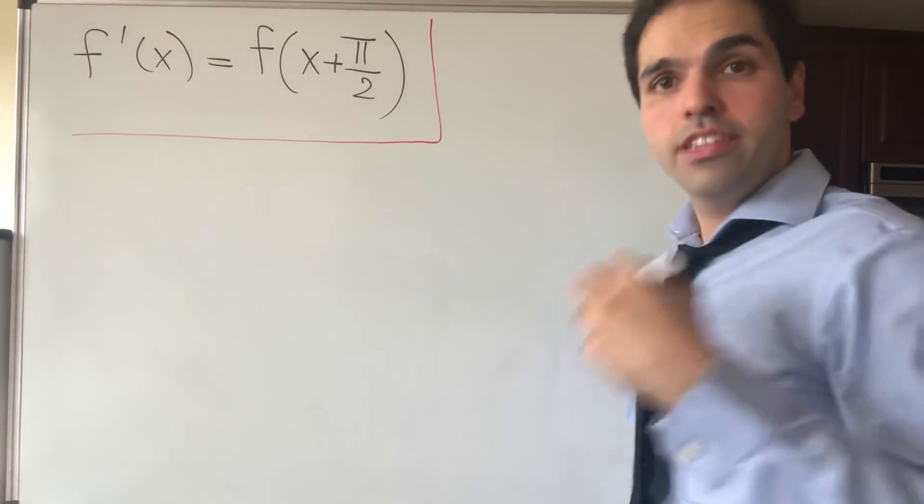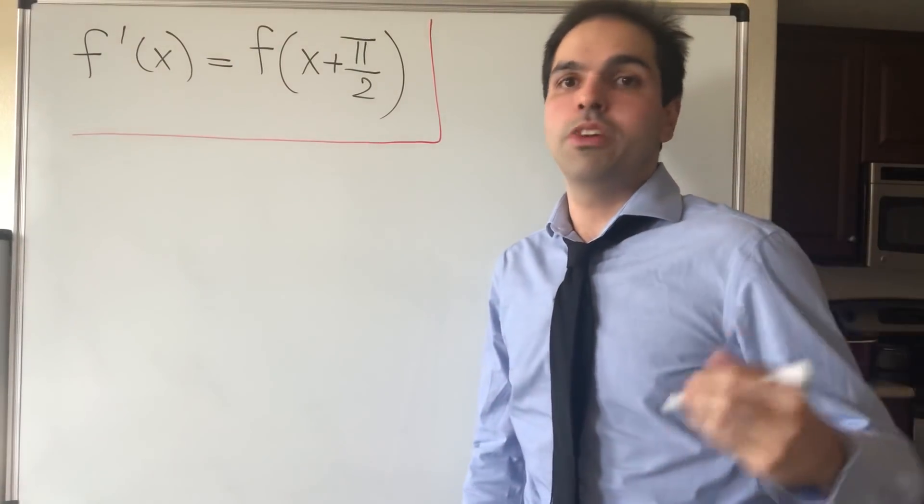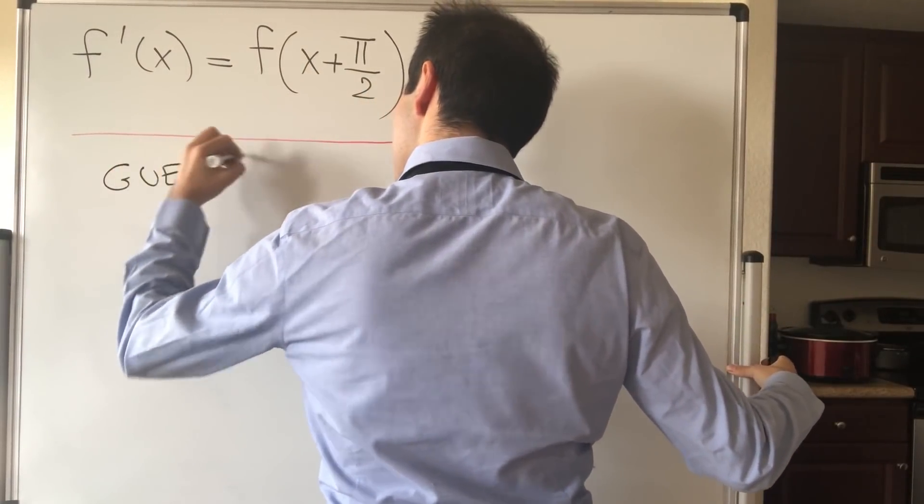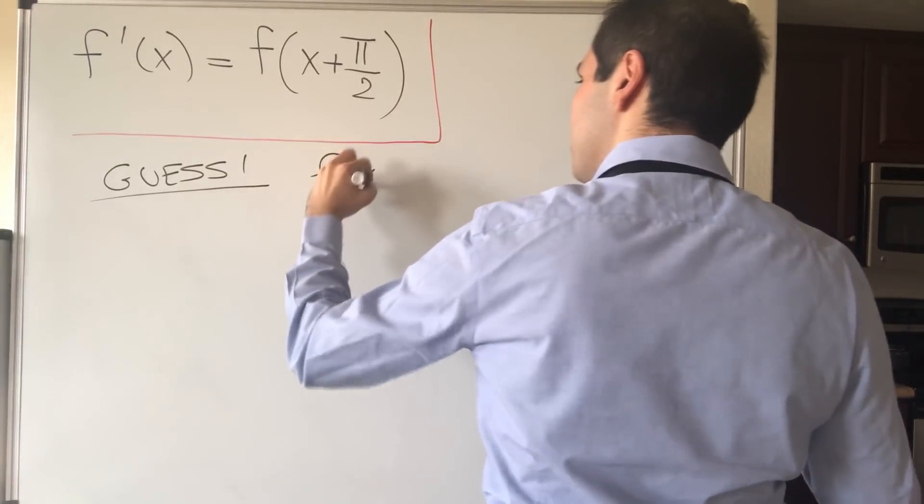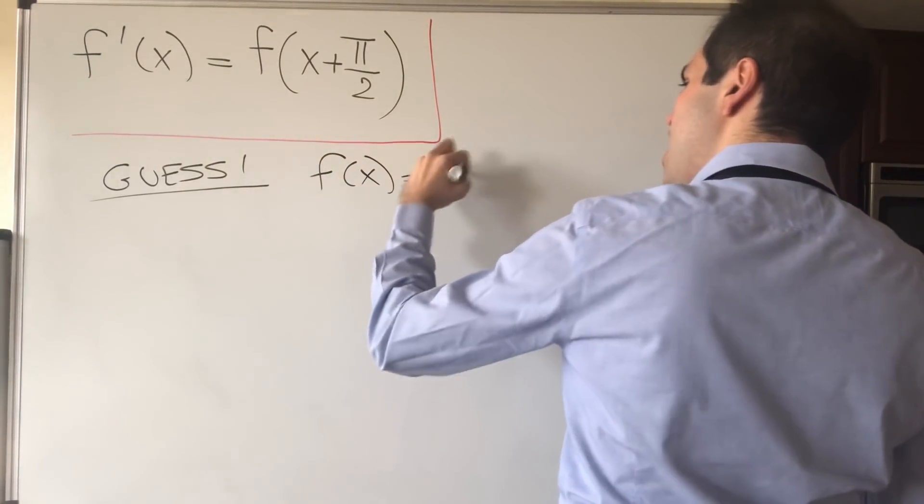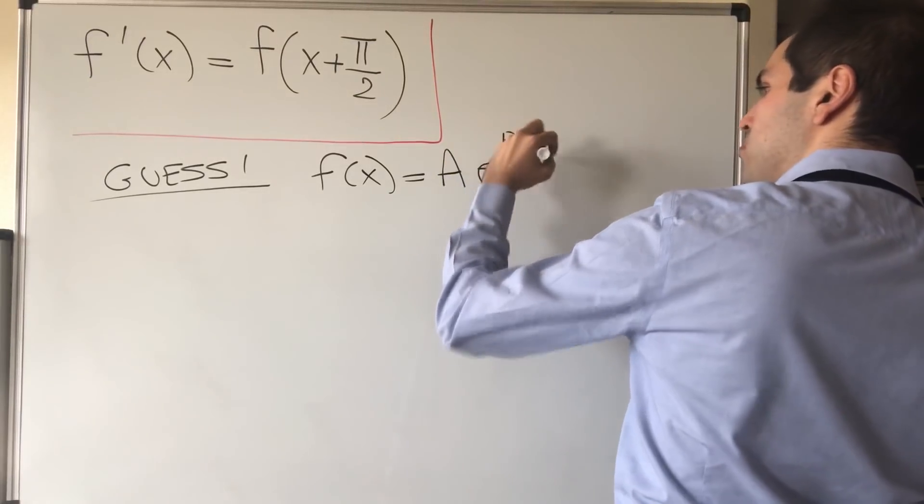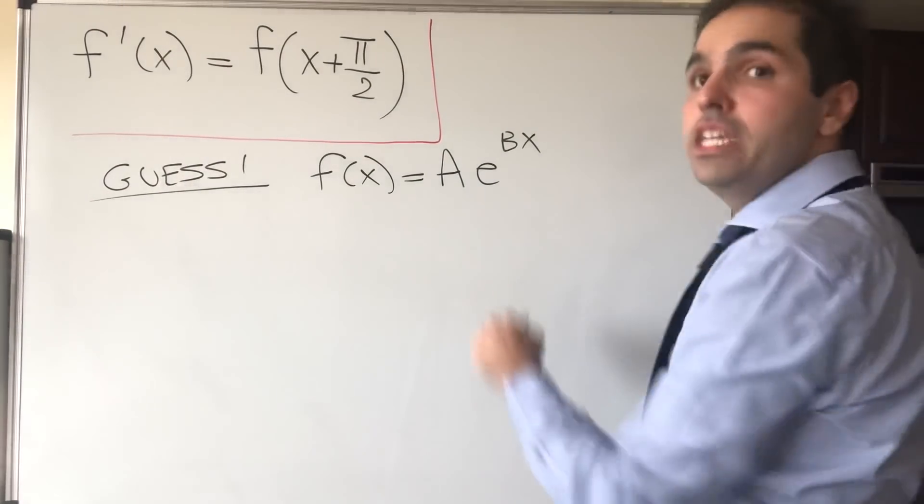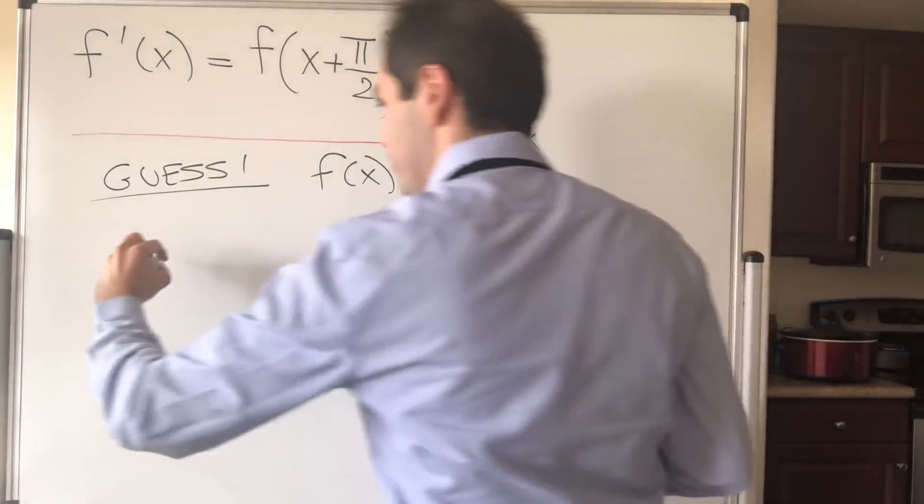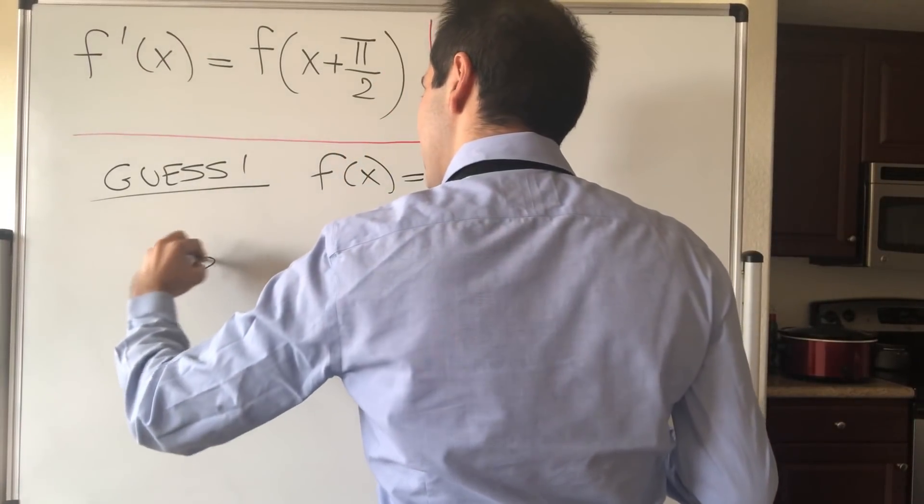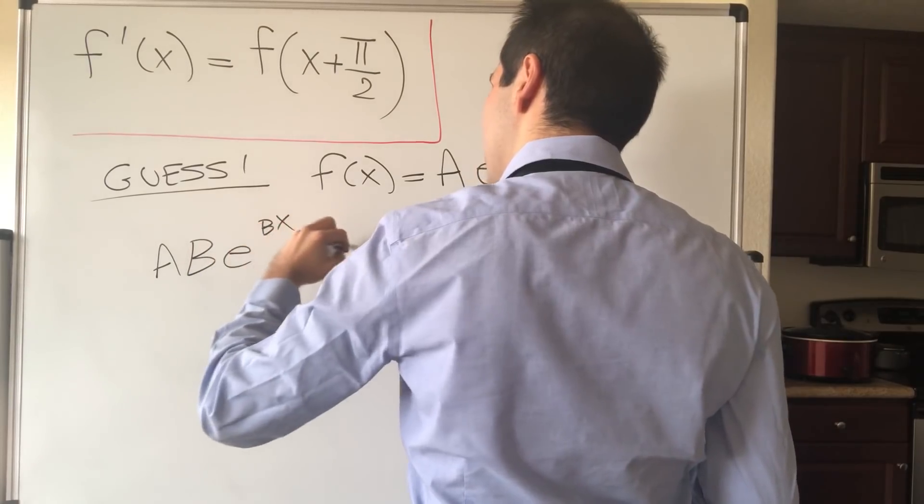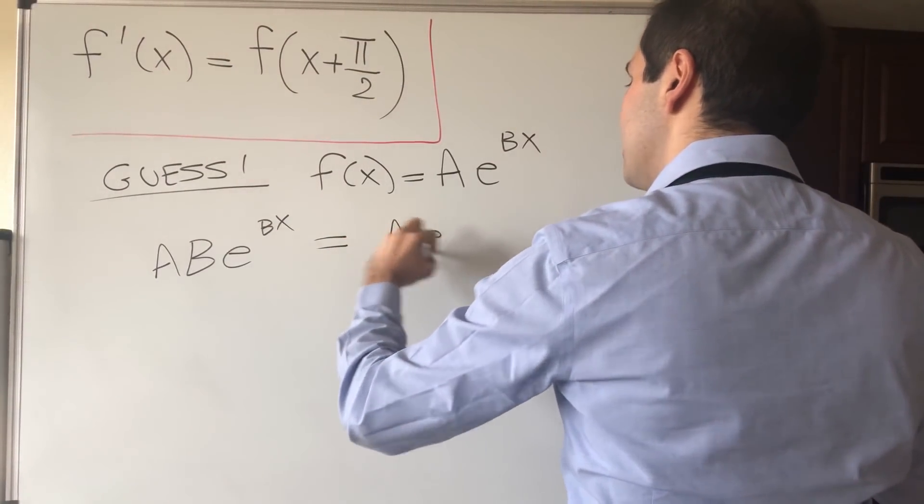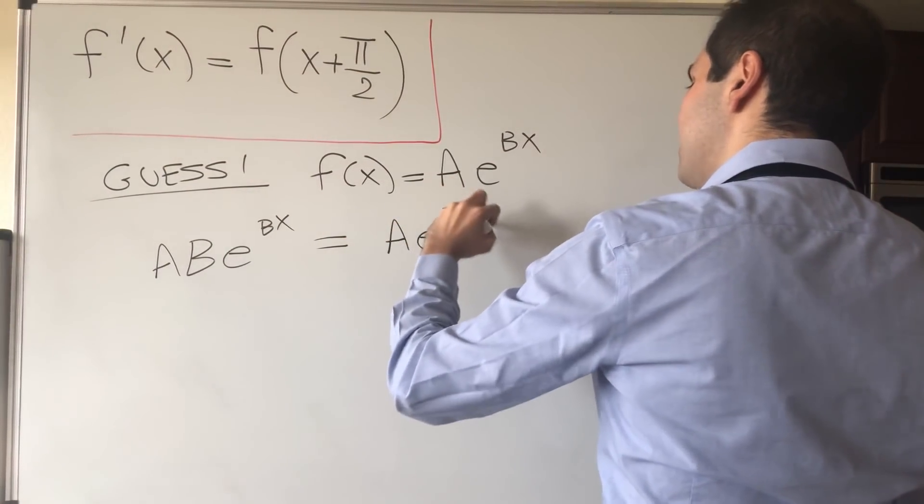So for instance, let's start with the typical guess, which are exponential functions. Guess one: guess that f(x) equals A times e^(Bx) and see what's going on. So the derivative of f is simply ABe^(Bx). On the other hand, the function shifted by π/2 units becomes Ae^(B(x+π/2)).